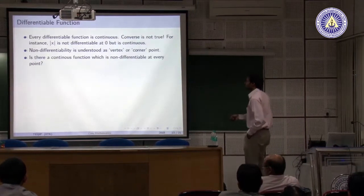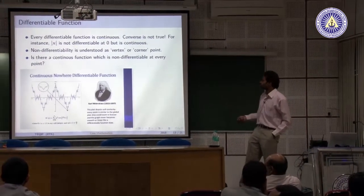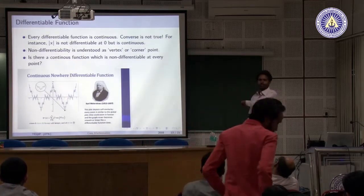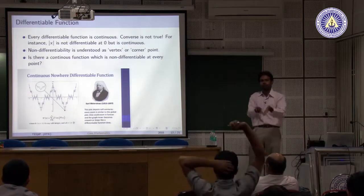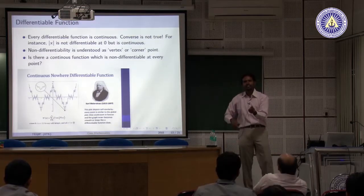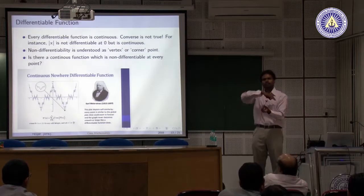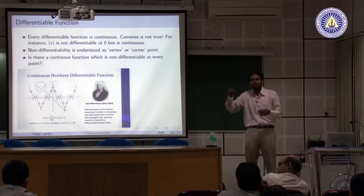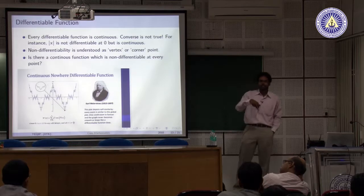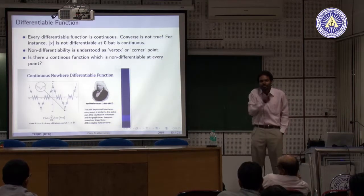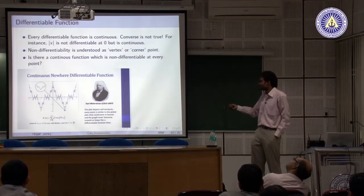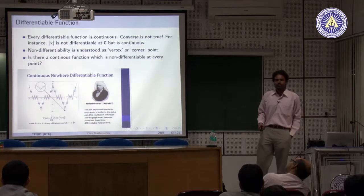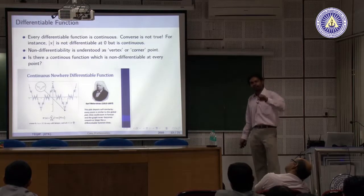After continuity, we study differentiability. Another major misconception people had was that you cannot have a continuous function that is non-differentiable at every point. When you imagine a non-differentiable continuous function you think of something like |x| — a corner at one point. People thought you could not have corners at every single point of a continuous function. Then Weierstrass came and gave an example: a function that is continuous everywhere but differentiable nowhere.